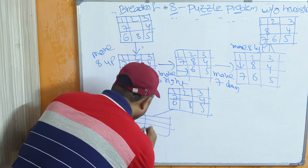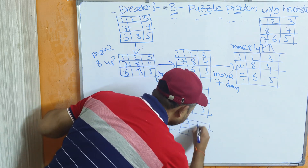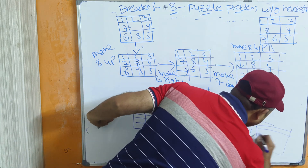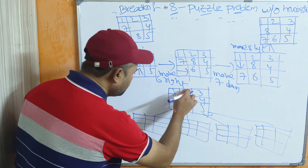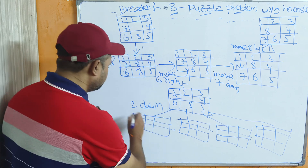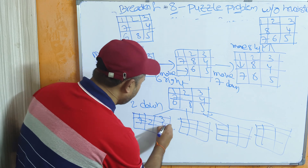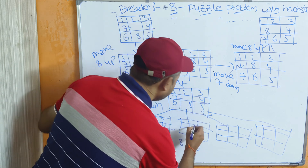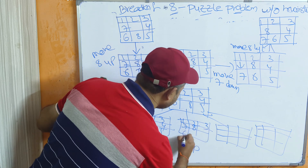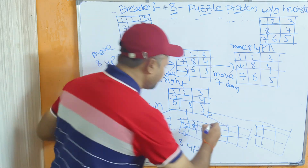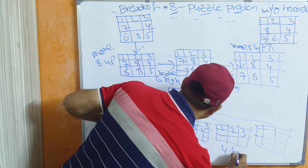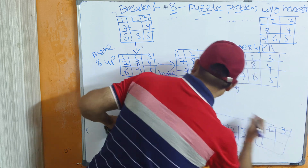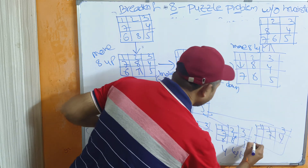The four configurations are: (1) Move 2 down → 1, blank, 3 / 7, 2, 4 / 6, 8, 5. (2) Move 8 up → 1, 2, 3 / 7, 8, 4 / 6, blank, 5 — 8 is placed in the center, remaining same. (3) Move 4 left → 1, 2, 3 / 7, 4, blank / 6, 8, 5. (4) Move 7 right → 1, 2, 3 / blank, 7, 4 / 6, 8, 5.